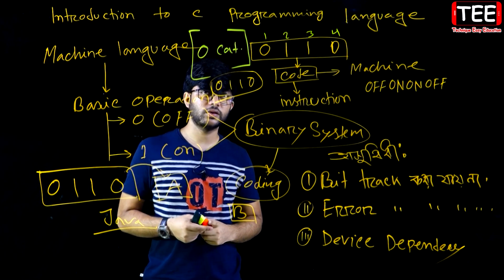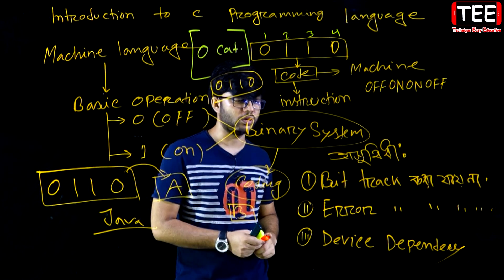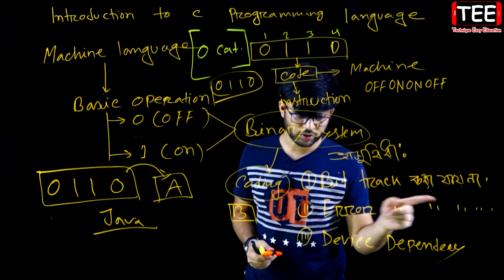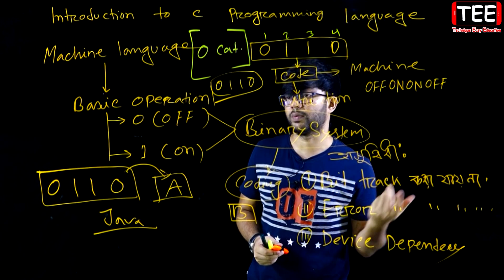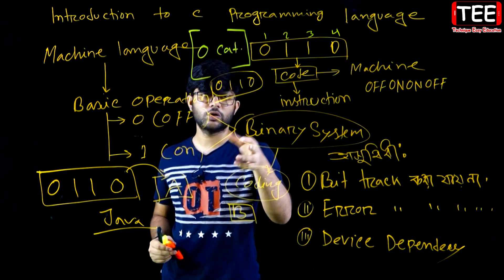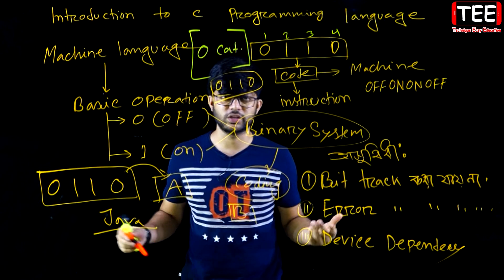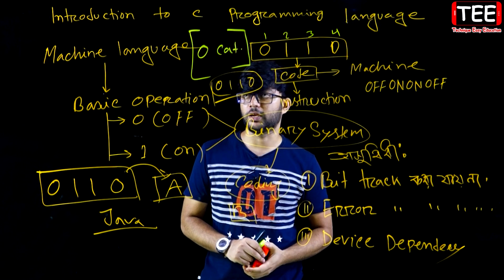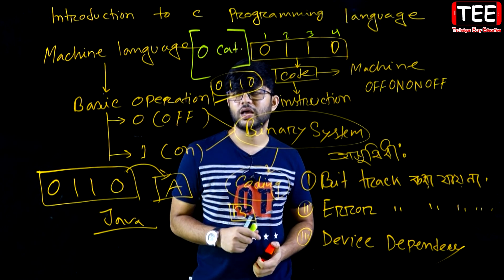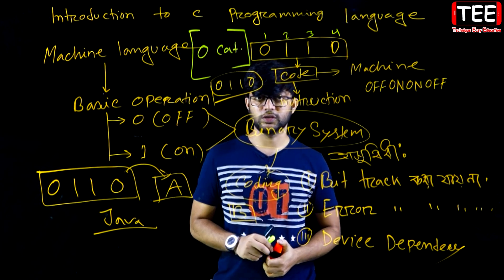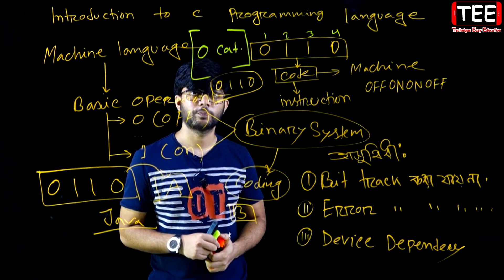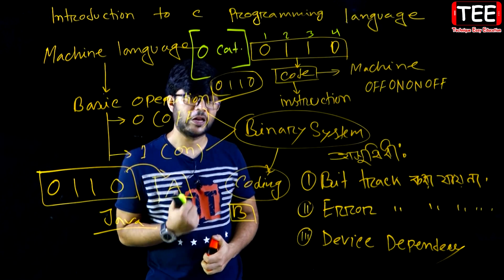Why is it zero category language? It's a problem that we've got to find — the error, the error, and the device dependency. The reason why we have to find the same thing. Next, we will find the assembly language. This assembly language is the same thing — so this is the one thing.